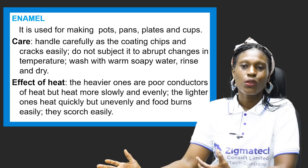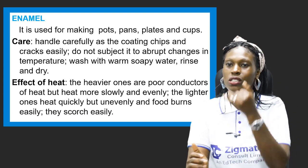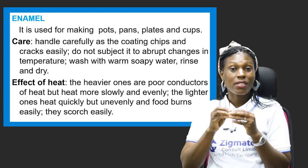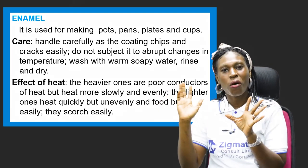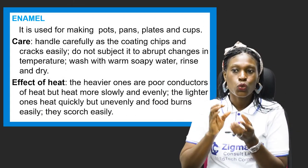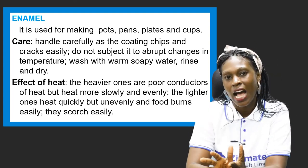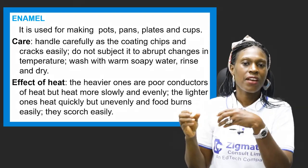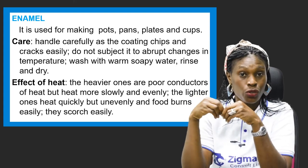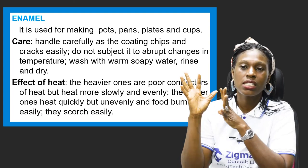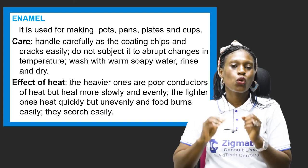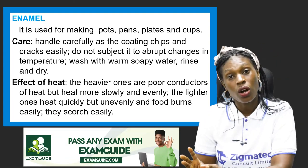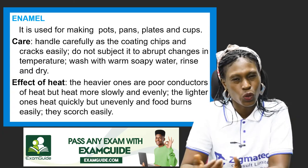Enamel is also commonly used for making pots, pans, plates, and cups. To care for enamel items, handle them carefully as the coating chips and cracks can come off easily. Do not subject them to abrupt changes in temperature. Wash with warm soapy water, rinse, and dry. Note that heavier enamel items are poor conductors of heat — they heat slowly and evenly — while lighter ones heat quickly but unevenly, causing food to burn easily.